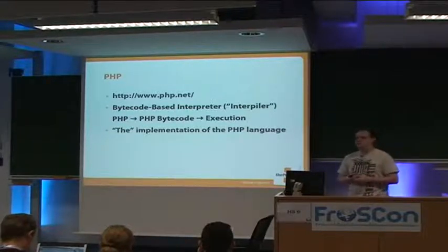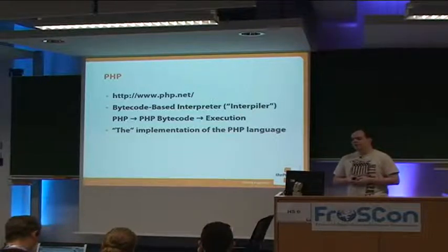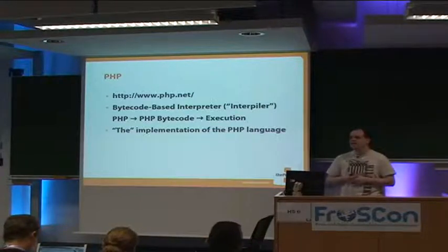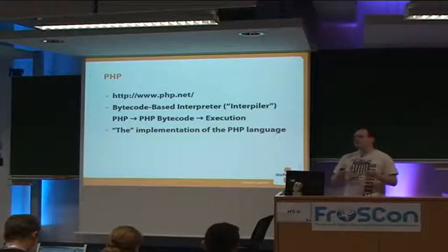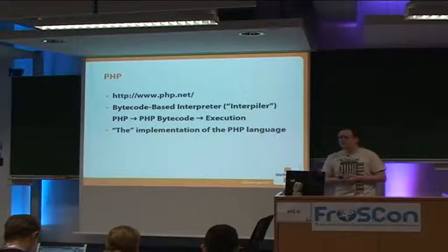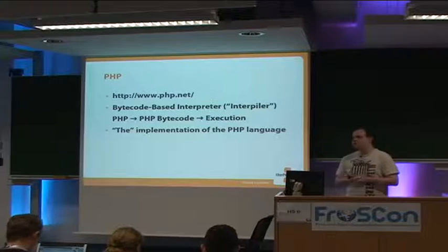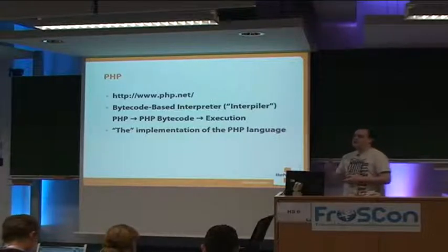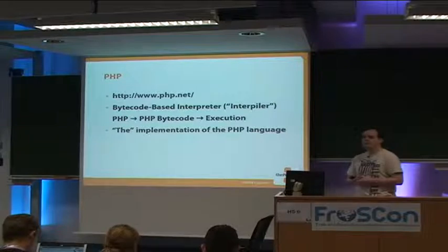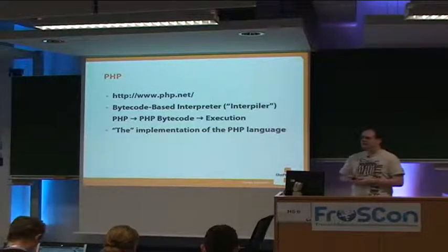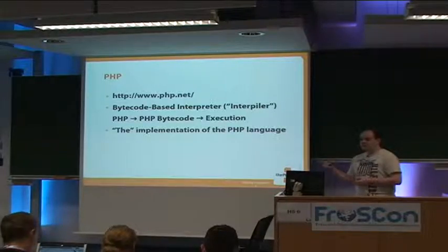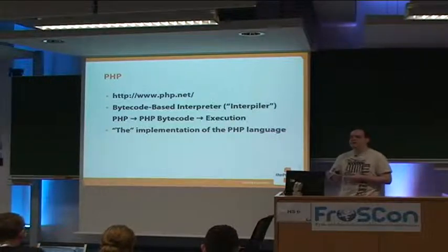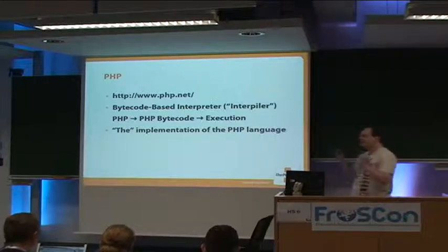Ever since PHP 4, the implementation of the PHP runtime — the official one — is a so-called bytecode-based interpreter, which some people refer to as an "interpiler" because it's a weird mix of a compiler — something that looks at your source code and turns it into something the machine can interpret — and an interpreter, which just takes an intermediate thing and executes it and then forgets about it. That's why you need to install something like APC, the alternative PHP cache, to do some bytecode caching and get rid of the compilation step in production.